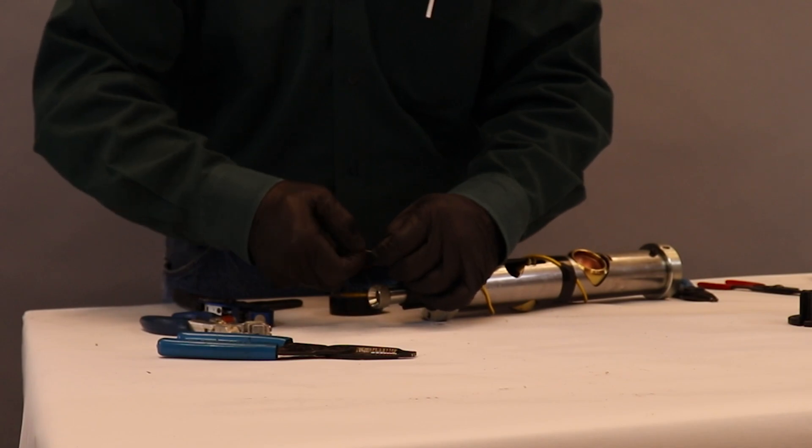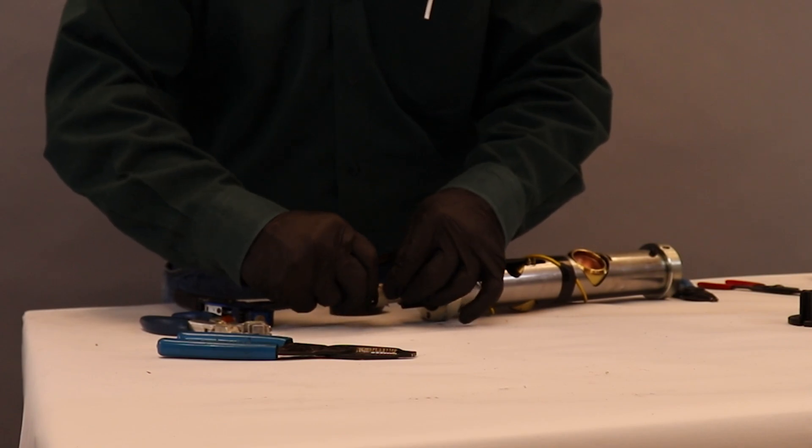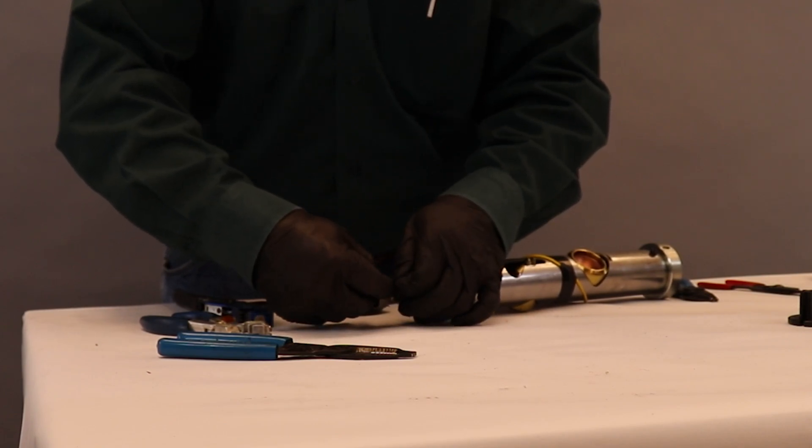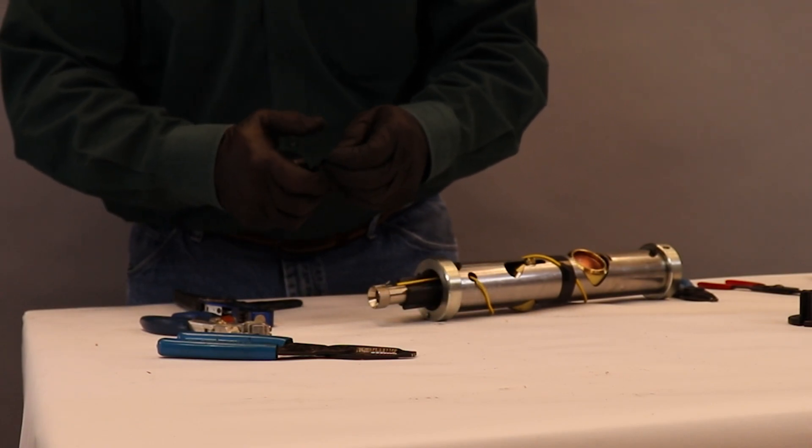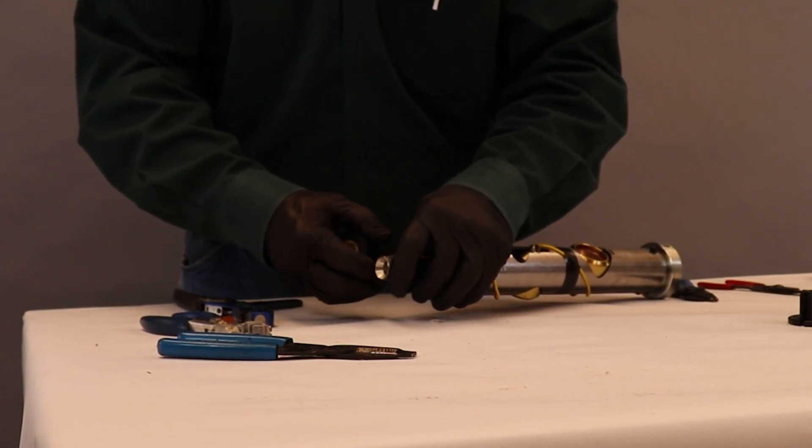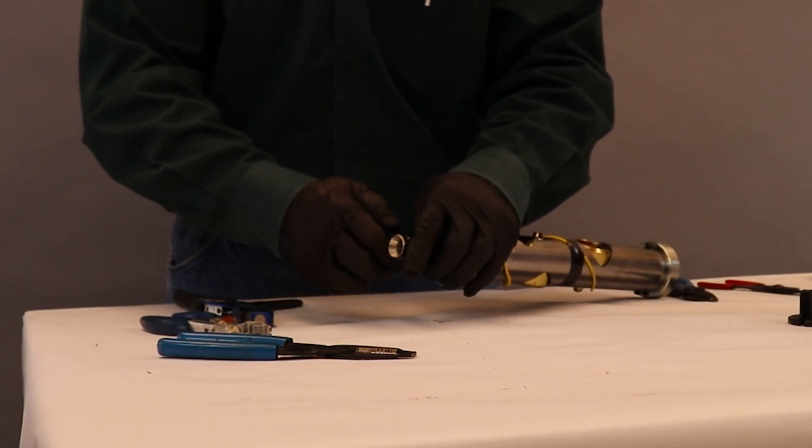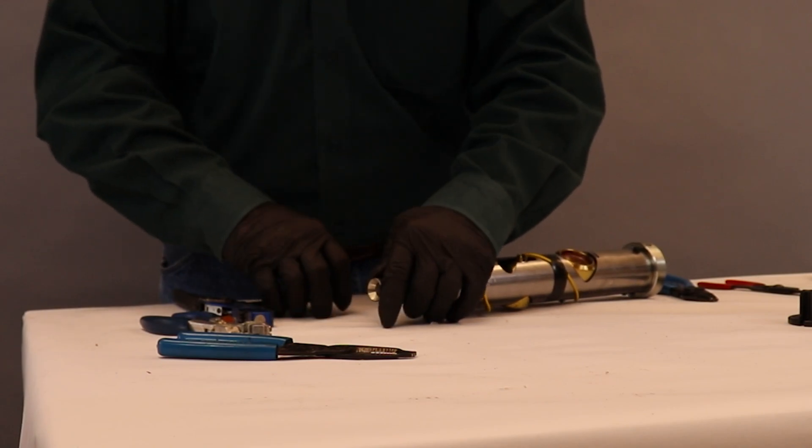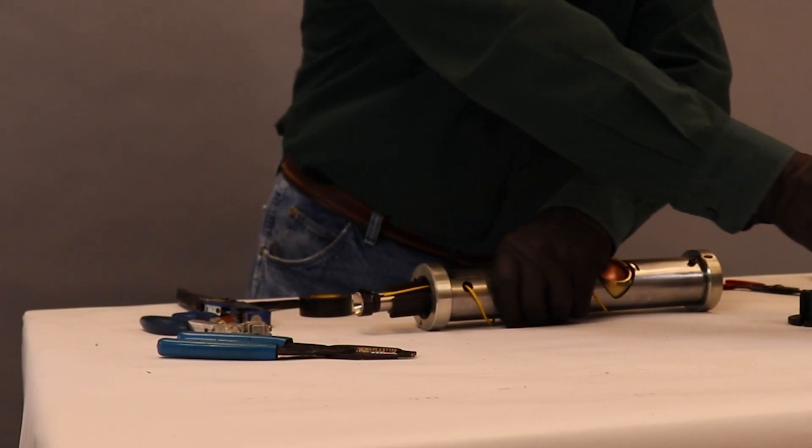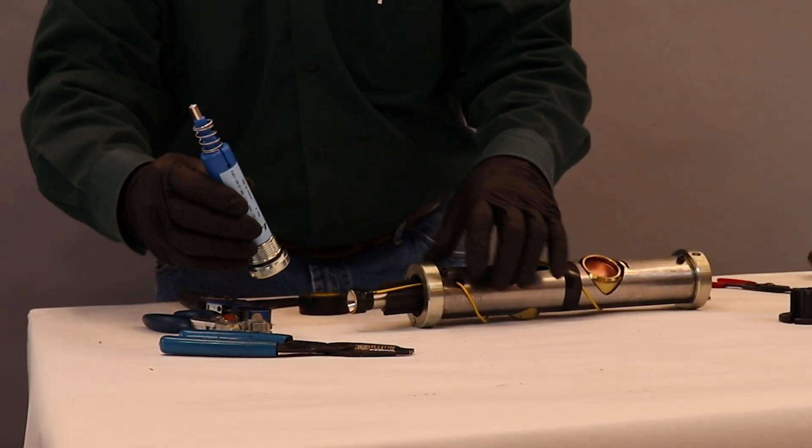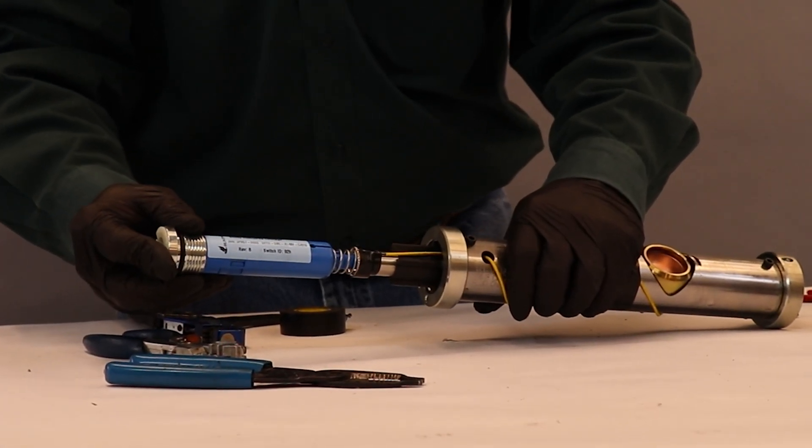You want to make sure that you have that electrical connection. The easiest way to make sure your connection stays is to put just a wrap of tape, secure it to your lower puck assembly. And again, this is going to be where your electrical connection will come into place with your gun assembly.